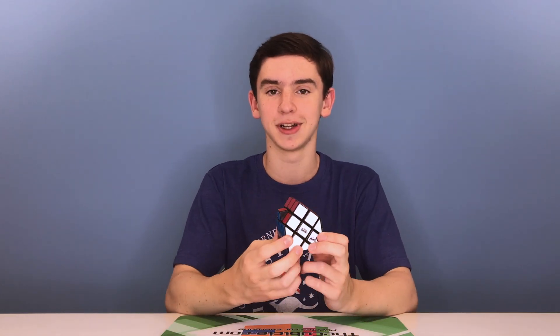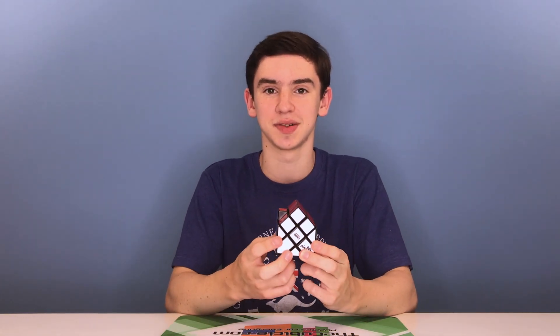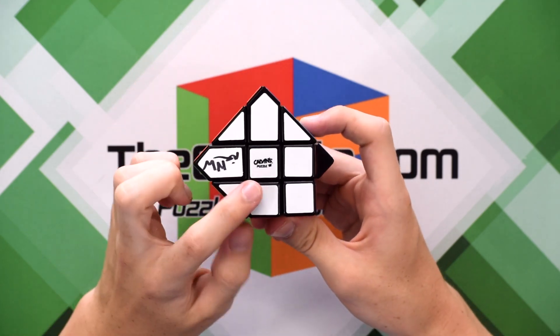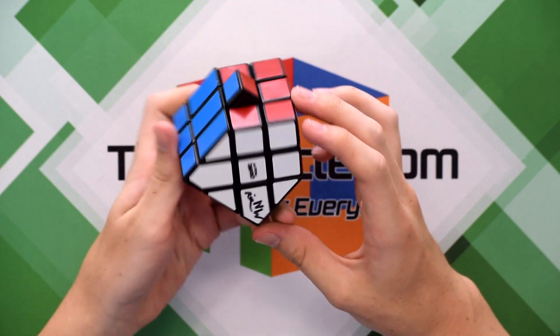And I did pick up a couple puzzles during my trip. The first one was this inverted house cube designed by Nathan Wilson. So while this is not a custom house cube that he built, it was mass produced by Calvin's puzzle. It does have a signature on it.